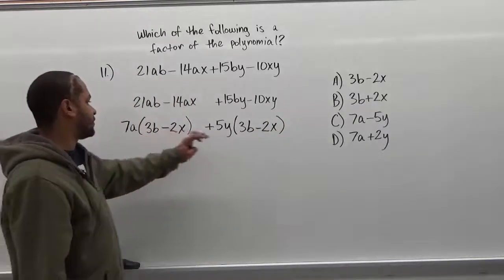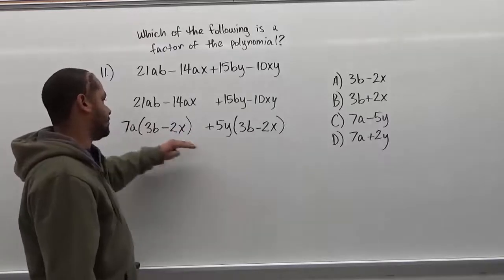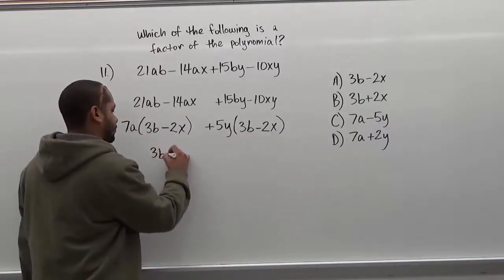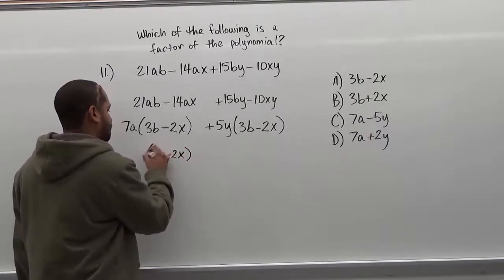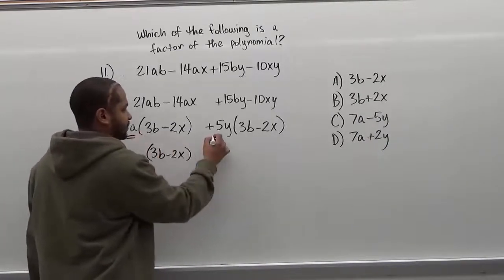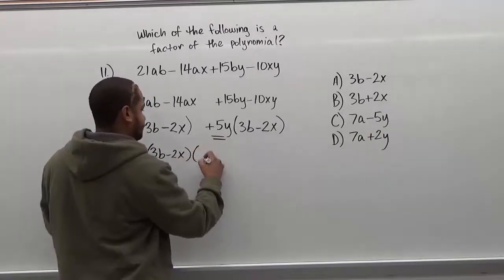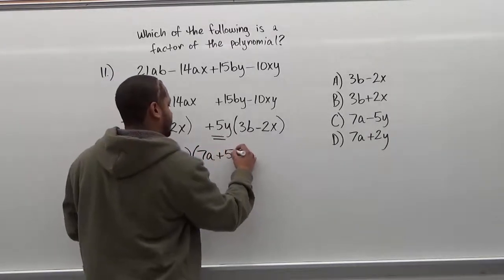Now that we have the two groups factored, we see that they have another common factor, which is 3b minus 2x's. So we're going to factor out the 3b minus 2x's, and in parentheses we're going to put the two leftover terms in the next set of parentheses. So we have 7a's plus 5y's.